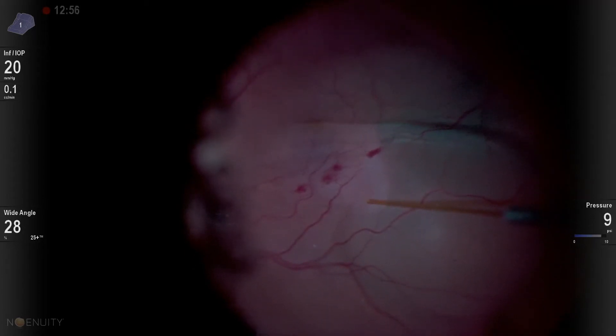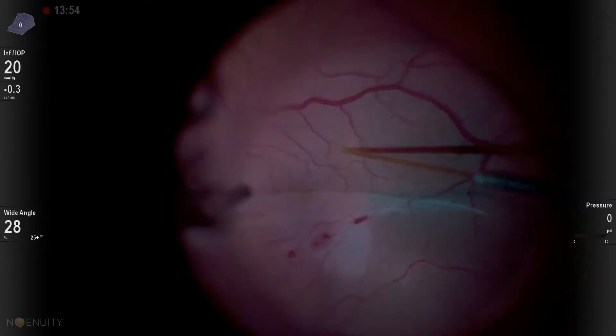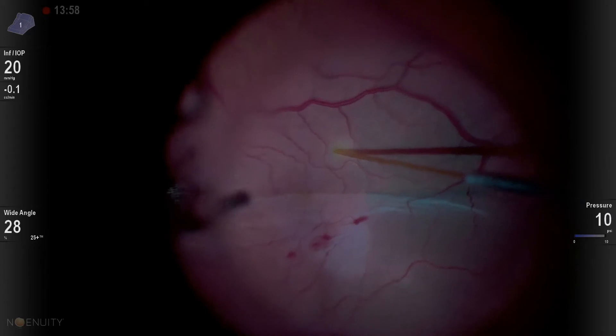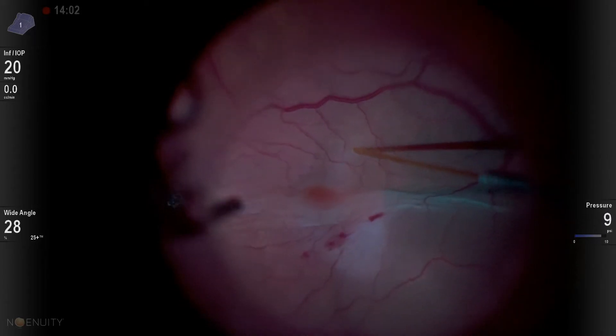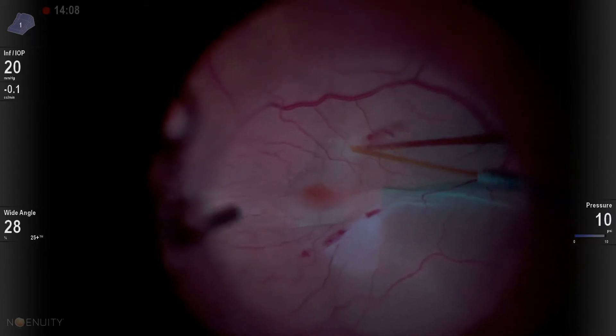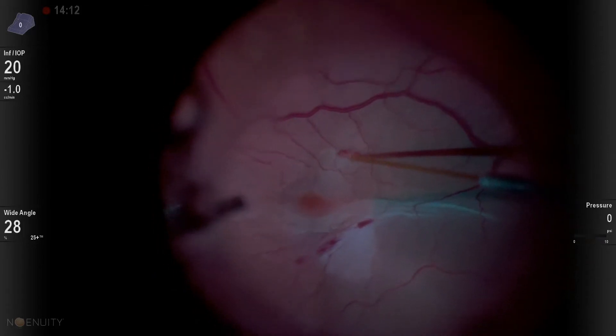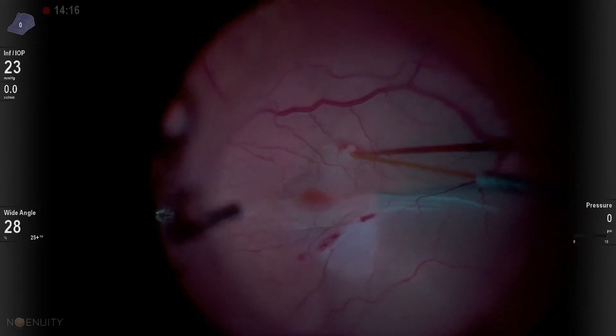And so my initial thought is, okay, these 39-gauge incisions that we're making to inject are small, so let's just try to go in a different location. So I start to inject in a different location, a little bit of hemorrhage there, so I increase our pressure.